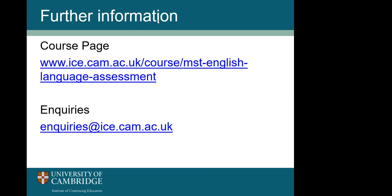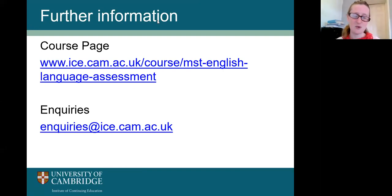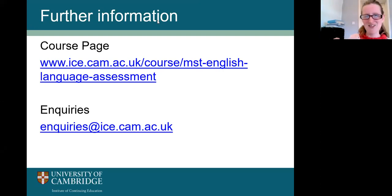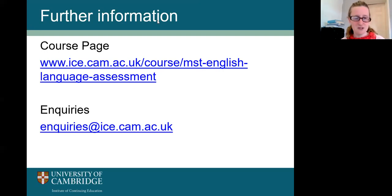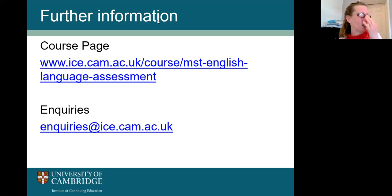A question around fees and the difference in price between home students and international students. Home students are defined based on government guidelines — it can relate to where you have been living in permanent residence for the last two years as much as your nationality. There is a calculator on the university website to work out fee status. The difference in price is fairly standard across MST courses, historically relating to subsidies given by the UK government for UK students and calculating the course cost against that.